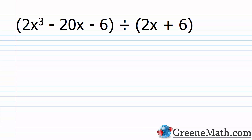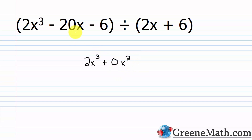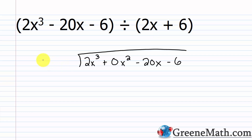Let's take a look at an example. This is not any more difficult than dividing polynomials when you have all the terms — it's the same kind of setup. I have 2x cubed minus 20x minus 6 as my dividend, which goes underneath the house. I have 2x cubed, then minus 20x next, so I'm missing that x squared term. So I'm going to put plus 0x squared as a placeholder, then minus 20x, then minus 6. My divisor is 2x plus 6 out here.